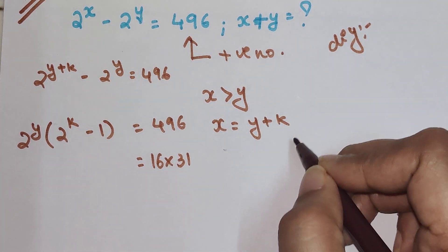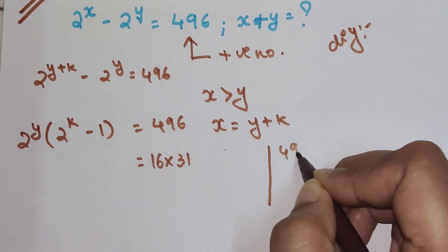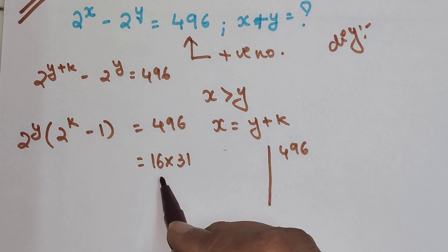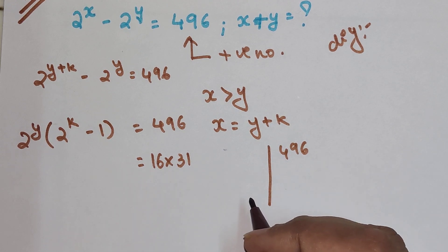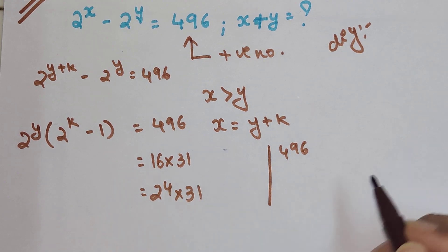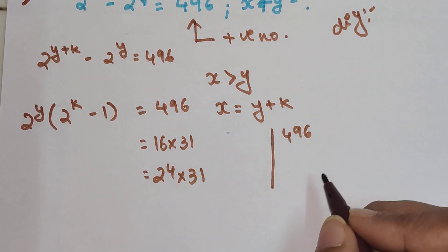So how did I do that? I actually went like this, and then I started with all of these factors and I came across that 16 into 31 gets me 496. So basically 2 raised to 4 into 31. Now 31 is a prime number, so I have to leave it as it is.